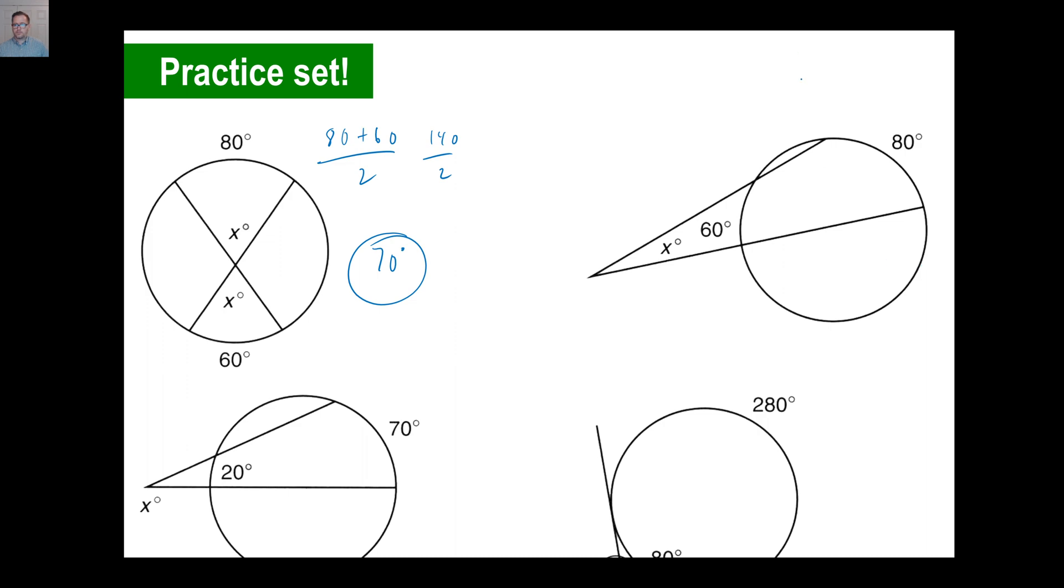Let's try this one here. These intersect outside the circle, so this time you're going to go 80 minus 60 divided by 2, and that is 20 divided by 2 is 10, 10 degree angle. Next one. These intersect outside the circle, so again, you're going to go 70 minus 20 divided by 2. So 70 minus 20 is 50 divided by 2, 25 degrees.